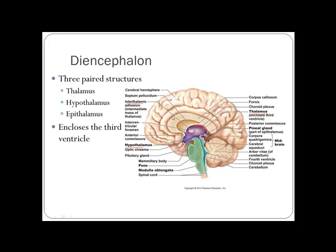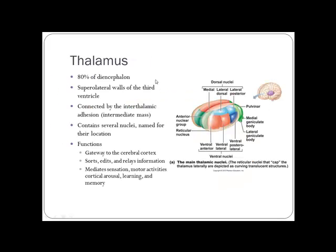The diencephalon has three parts: the hypothalamus (below), the thalamus, and the epithalamus (in back). The thalamus takes up most of the diencephalon and is made of numerous nuclei named by location — anterior, ventral anterior, ventral lateral, ventral posterior, etc. Think of it like a router: it takes in information and sends it to the right area of the brain. It's a gateway to the cortex that sorts, edits, and relays information, mediating sensations, motor activities, learning, and memory.